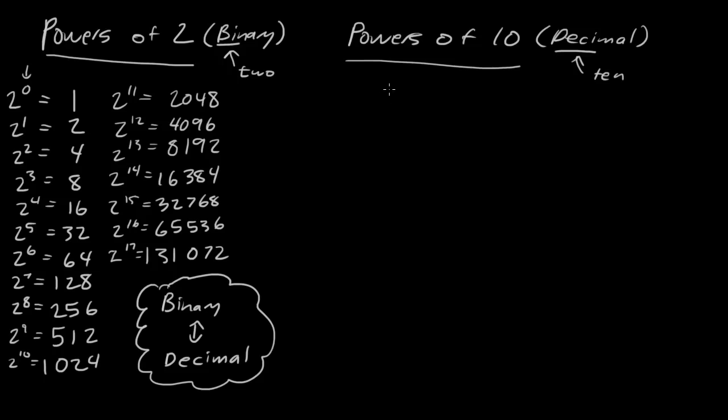Now, powers of 10 are pretty straightforward. If I say 10 to the 0, that's just equal to 1. What if I have 10 to the 1, that's equal to 10. And 10 squared, well, that's just 100. And what you should notice, in decimal, whatever this number is here, if I have, say, 10 to the 3rd, that's 1,000. What you should notice is that this number here corresponds to how many 0's there are after the 1. That's how it is in decimal.